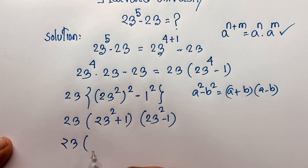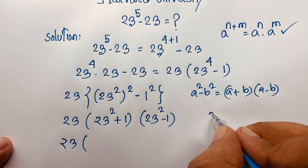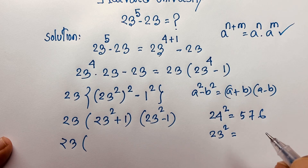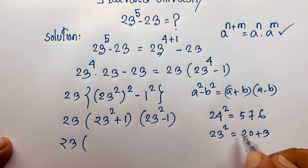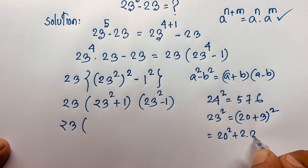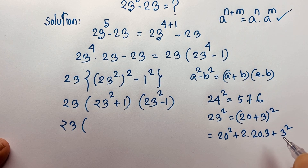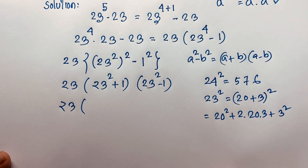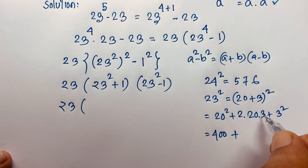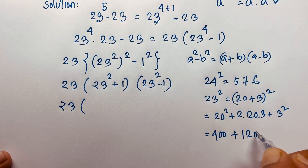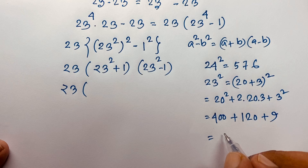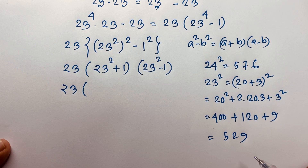Now 23 to the power 2 is equal to what? I write 23 as (20 plus 3) to the power 2 and apply the formula (a plus b)² equals a² plus 2ab plus b². This gives 20² plus 2 times 20 times 3 plus 3², which is 400 plus 120 plus 9, so 23 squared equals 529.